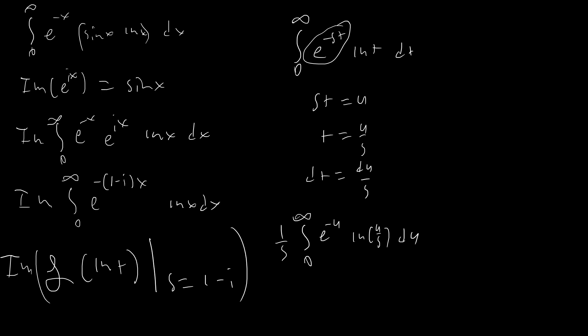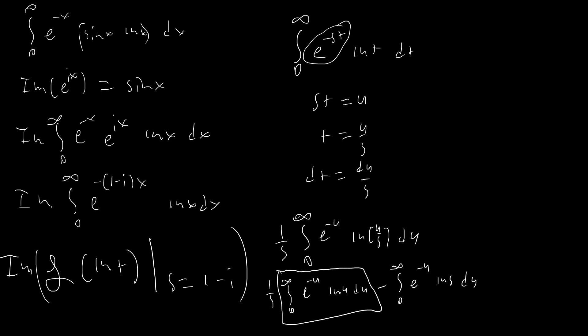Now we split ln(u/s) into ln u minus ln s. That gives us 1 over s times the integral from 0 to infinity of e to the negative u times ln u du, minus the integral from 0 to infinity of e to the negative u times ln s du. The first integral is a very famous result that evaluates to negative gamma, where gamma is the Euler-Mascheroni constant. So the first part is just negative gamma over s. Since ln s is constant with respect to u and the integral of e to the negative u from 0 to infinity equals 1, the second part is just negative ln s. So the Laplace transform of ln t equals negative gamma minus ln s, all over s.